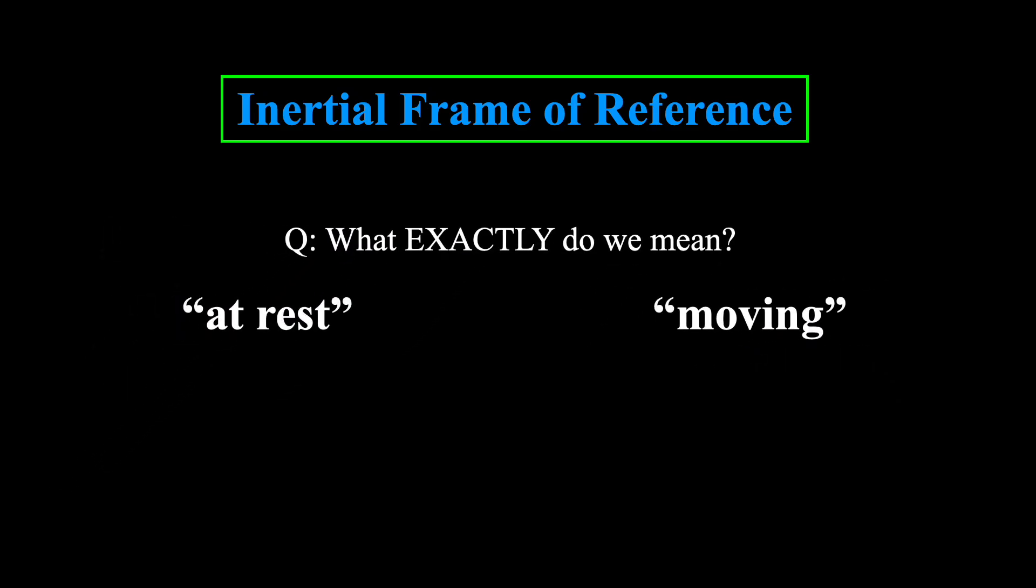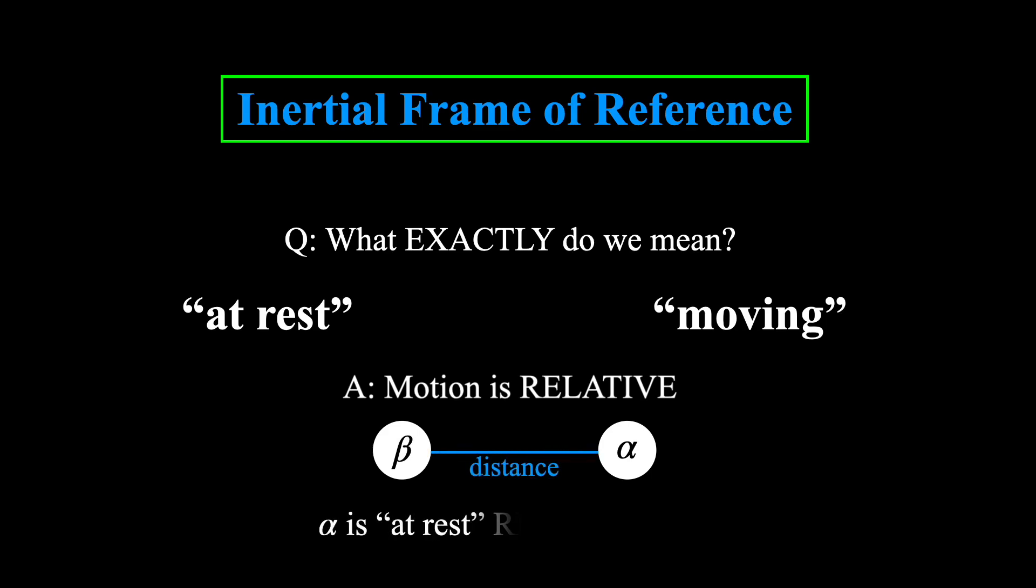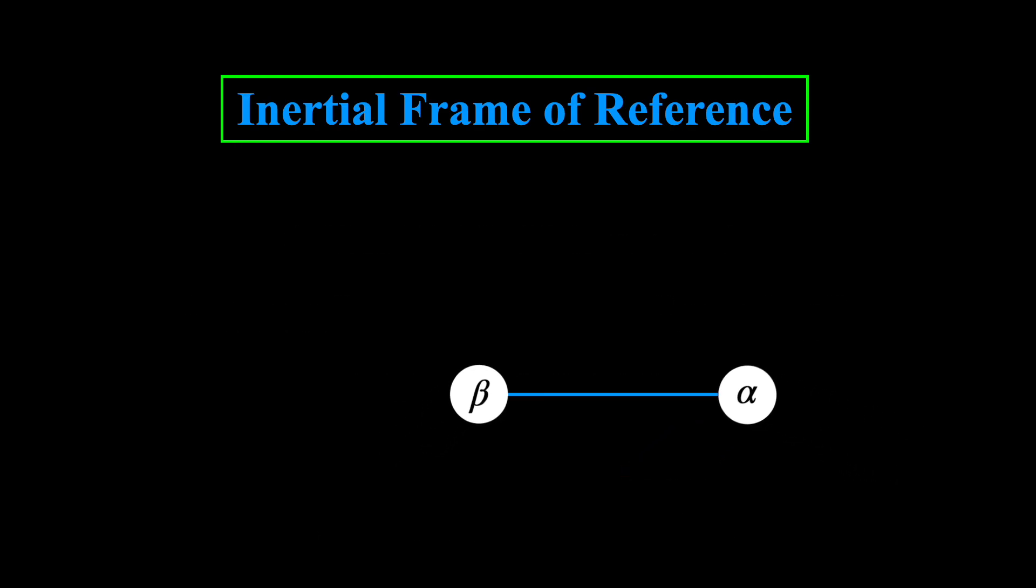One answer to this question is to say that motion is relative. So for example, if we have two particles, let's call them alpha and beta, we could say that alpha is at rest relative to beta if the distance between them is not changing. However, if the distance is changing, then we say that alpha is moving relative to beta.